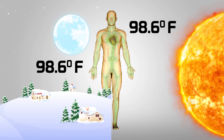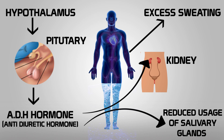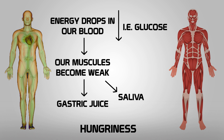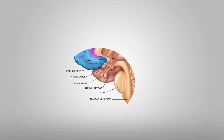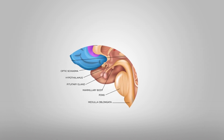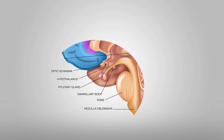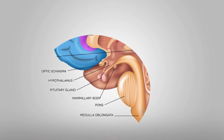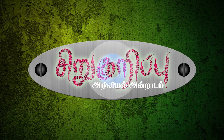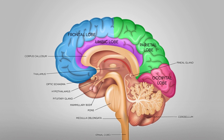At the same time, we maintain the temperature at 98.6 Fahrenheit. How are we doing this? We have the hypothalamus. That's why we can see the hypothalamus here.